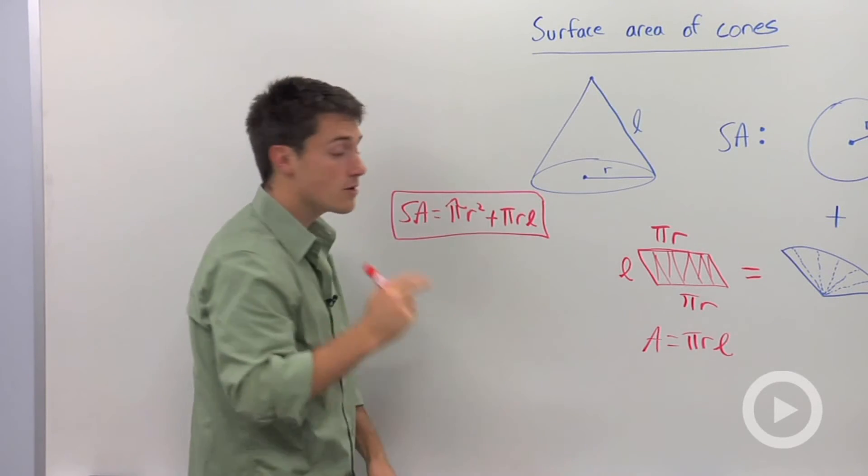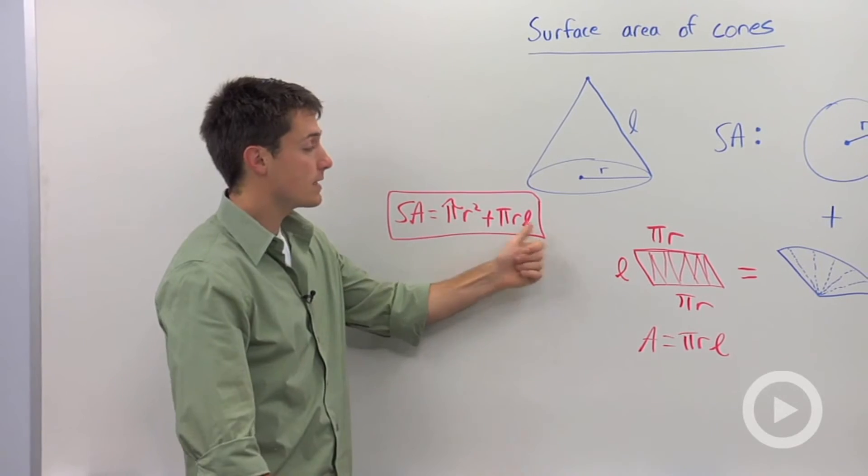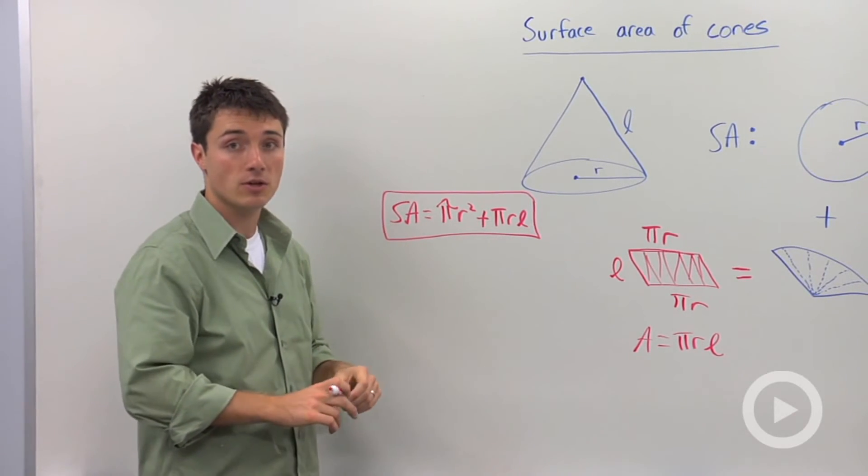So you only need to know two dimensions, the radius and the slant height, and you can calculate the surface area of any cone.